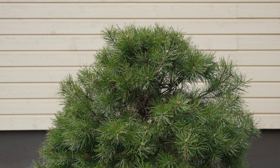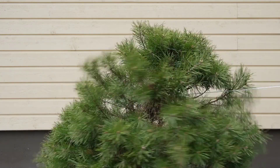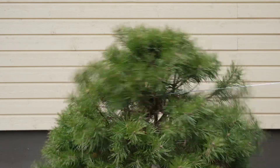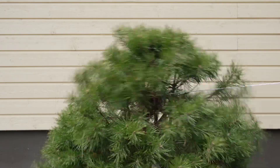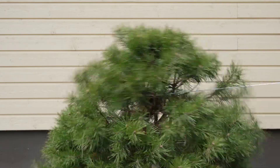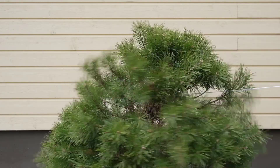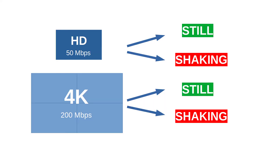One version with the tree still and one with the tree being shaken. I tied a rope to the tree and shook it while filming. So now we have 4K with static tree and shaking tree, and we have HD with static tree and shaking tree. We need both still and moving object videos because this matters as you'll soon see.